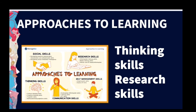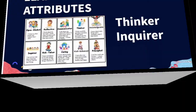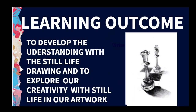Our approach to learning involves thinking skills and research skills. We are developing thinking skills by revising and learning more about shape, colour, light, shadow and composition, implementing these through observation skills and creating artwork. Our learner profile attributes are thinker and inquirer. Our learning outcome is to develop understanding of still life drawing and to explore our creativity with still life in our artwork.